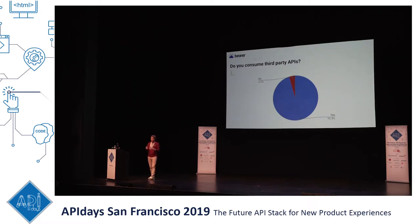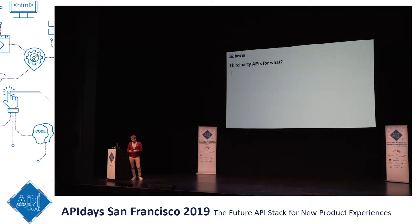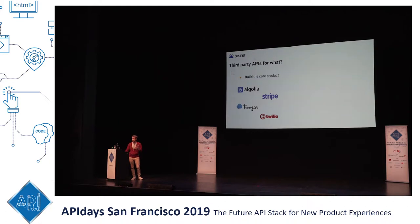We asked whether companies consume third-party APIs and build API integrations. As probably all of you here are doing. The only one who said no was a fully open-source software company, which you can understand easily. Then we asked why they use third-party APIs. The first reason is to build your core product using API-first products — you don't want to reinvent the wheel. You're not going to build the next search engine or payment system.